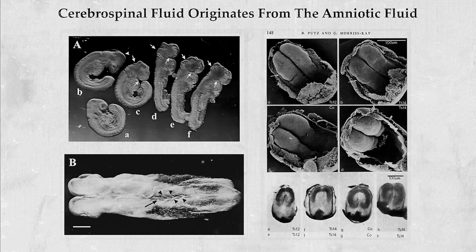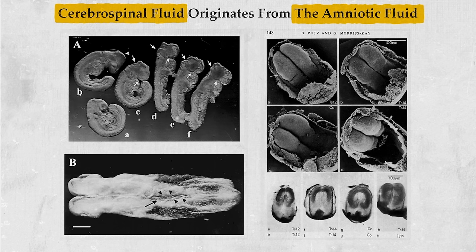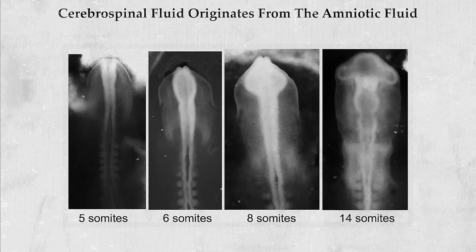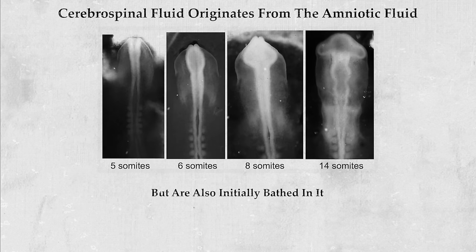Thus, cerebrospinal fluid actually originates from the amniotic fluid during our embryological development. Our brain and spinal cord are not just organized around fluid, but are also initially bathed in it, emphasizing the fluid's integral role from the very beginning of our development.